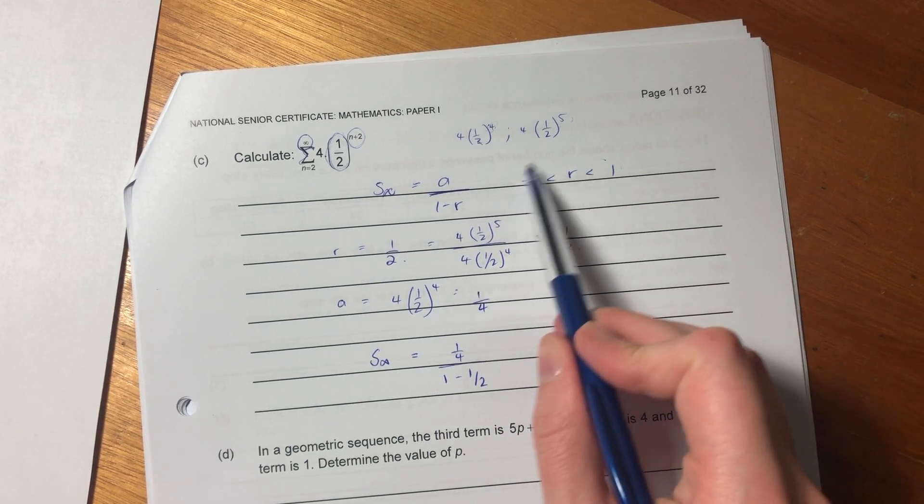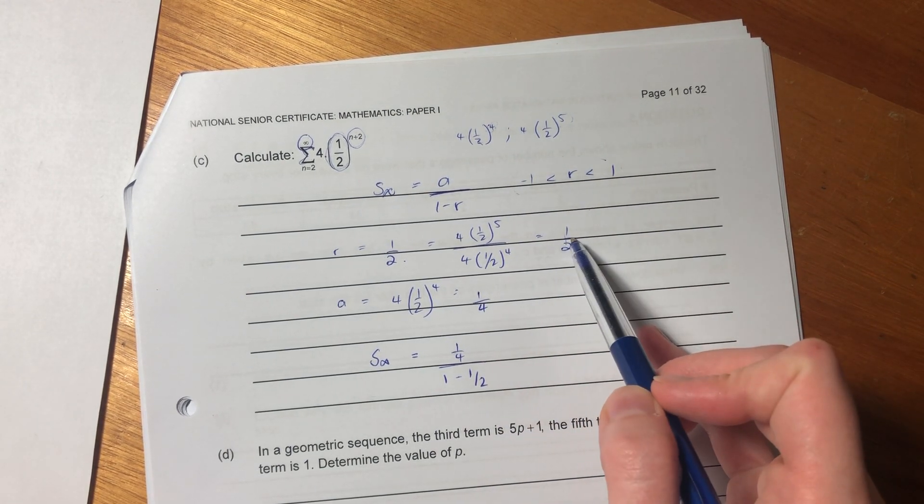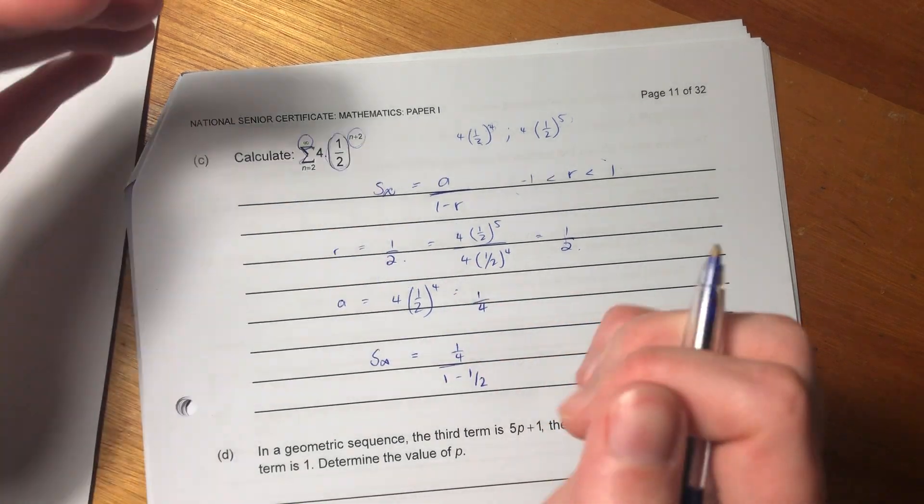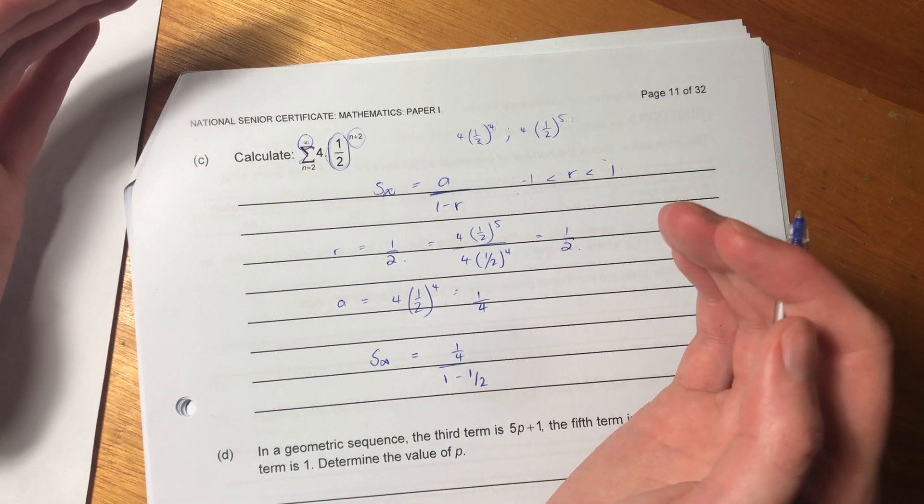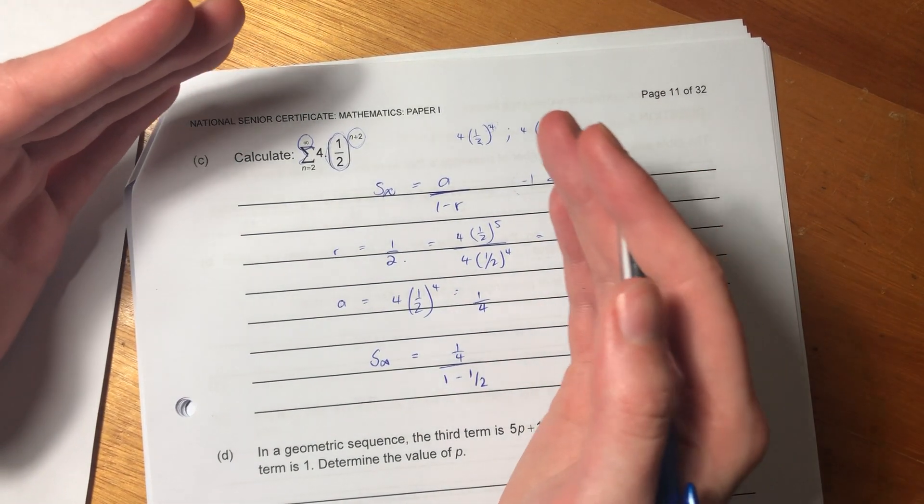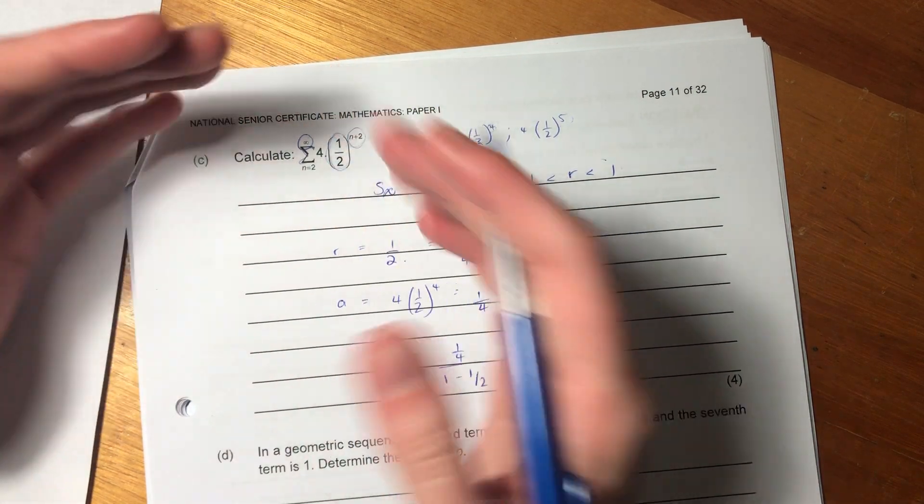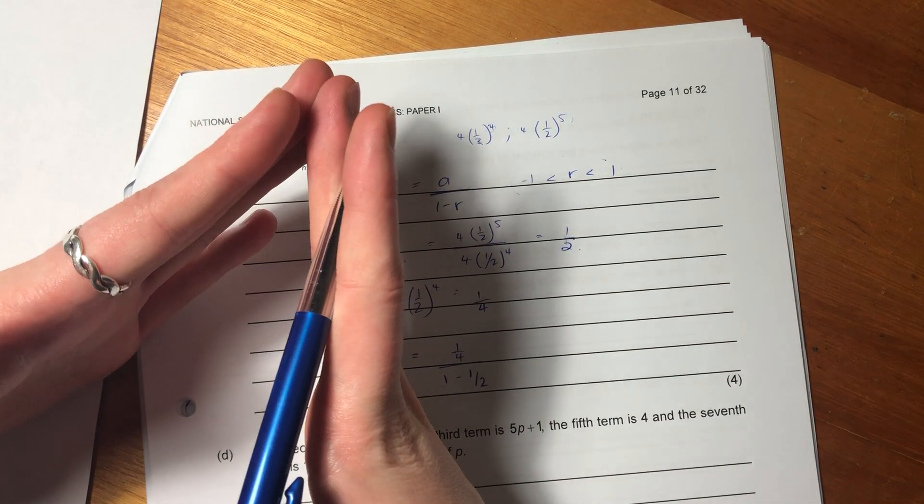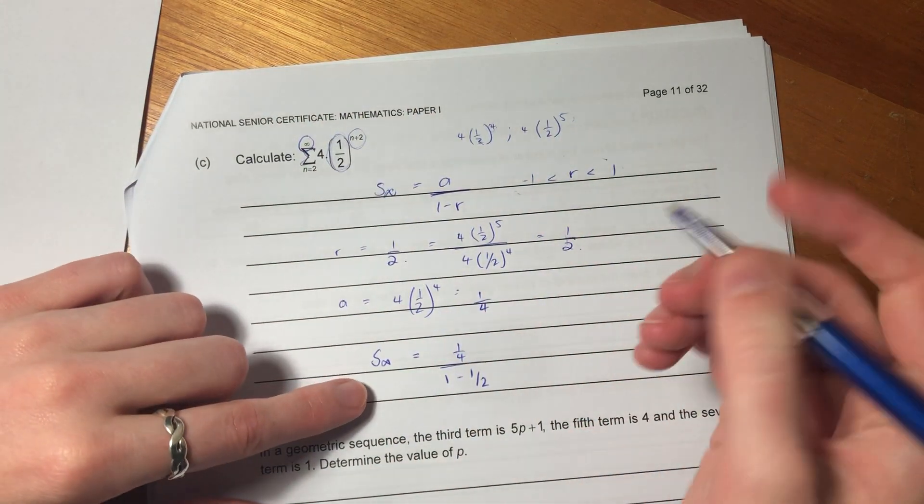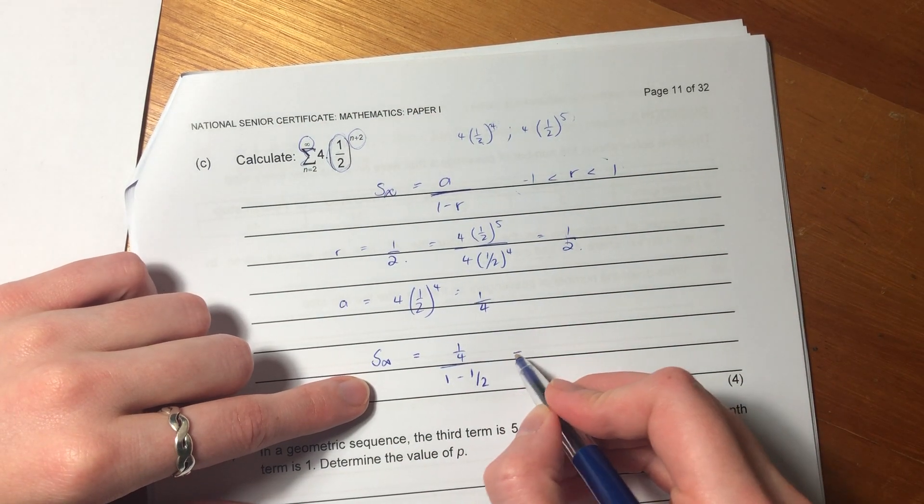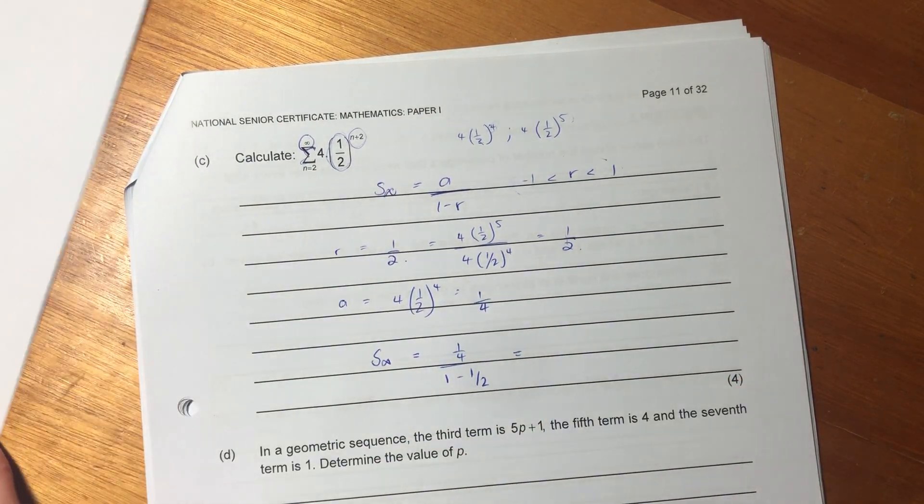We know it converges because effectively what happens is you're timesing it by fraction. So it means that each term is going to get smaller and smaller and smaller as we head to infinity. So it's going to converge towards a point. And that's what we are showing here. So let's just pop this into our calculator and let's see what it converges towards.